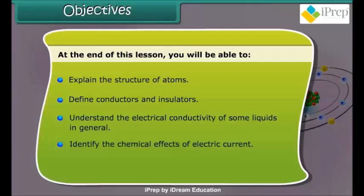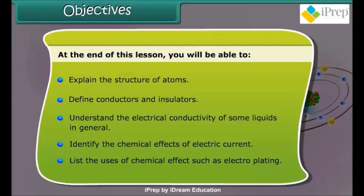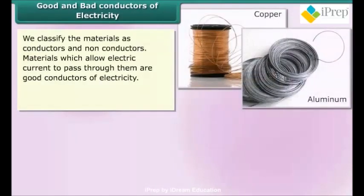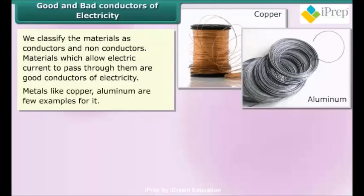We classify the materials as conductors and non-conductors. Materials which allow electric current to pass through them are good conductors of electricity. Metals like copper and aluminum are a few examples of it.